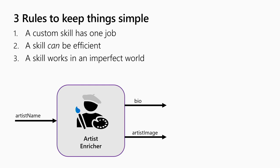The second rule: we wanted it to be efficient — to work well with others so things can move quickly; otherwise it will take forever to enrich content. And the third rule is an acknowledgement that bad stuff happens. It may be that I want to get the biography for an artist and that artist is not found in a database, or the network goes down. We have to have a way to figure out what to do with that.